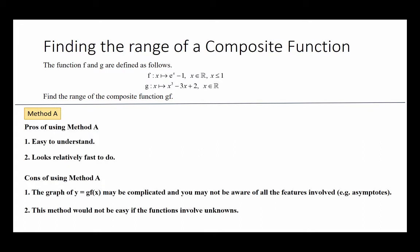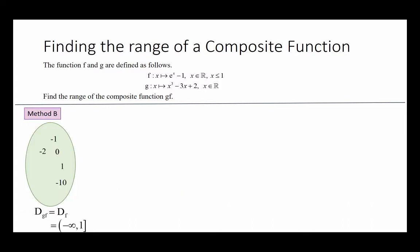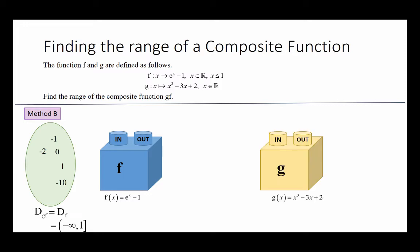There are a few pros and cons of using Method A, as shown on the screen. You can spend some time to read through these. Next, we will move on to Method B. In this method, we still start off with the set of values which is the domain of gf, the same as the domain of f. But instead of looking at the composite function as one single machine, now we will see it as a machine that consists of two separate components — the first component being function f, and the second component being function g.